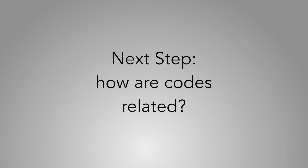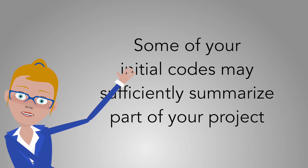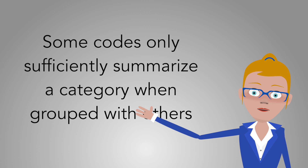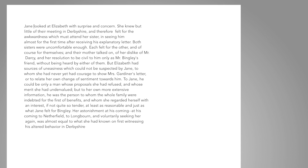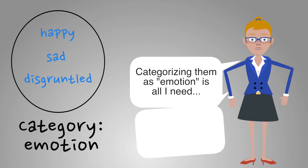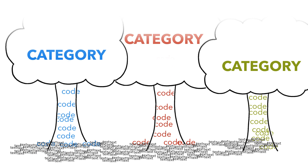From there, you're thinking about how those codes relate to one another. Some of those codes are in and of themselves sufficiently summative to understand your research question, and it becomes its own category or theoretical intervention. Others might be related to one another, and then you will collapse them together into a single category. For instance, you might realize that you've coded a set of text as happy, sad, disgruntled, and you realize that in and of themselves they're too specific, but as a group the category 'emotion' is a more useful category to summarize each one of those codes. So you're moving from codes — textual level pieces of information — to categories where they fit into one another.